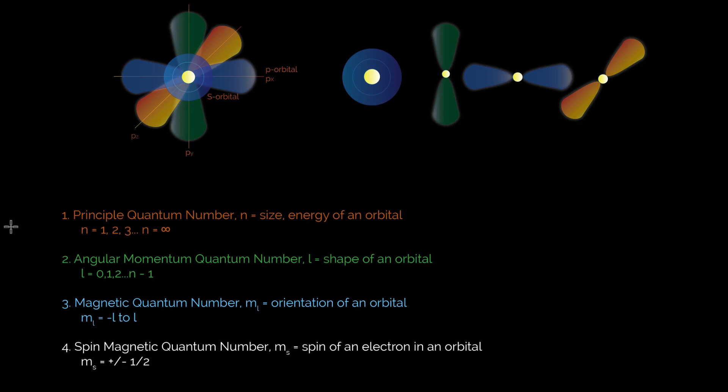The second quantum number is angular momentum, and I just call this l. And l is that extremely important indicator of the shape of an orbital. So l can be 0, 1, 2, any whole number value up until n minus 1. You will never have an l value that is equal to your n value.